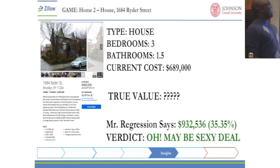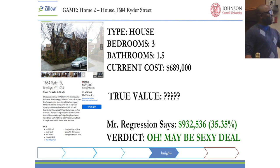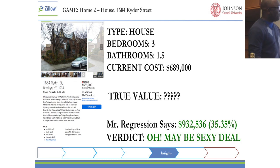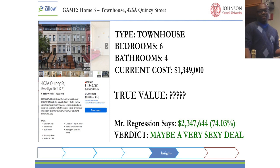Going to the next one — we have a house, three bedrooms, two bathrooms. The current cost versus the true value as the regression says is $900,000. So this may actually be sexy because you might be able to move the rent up a little bit faster and accrue that money depending on your target return percentage. Then the third one — the townhouse — is where we saw the play of the big coefficient, and this is where townhouse was definitely the most significant variable.